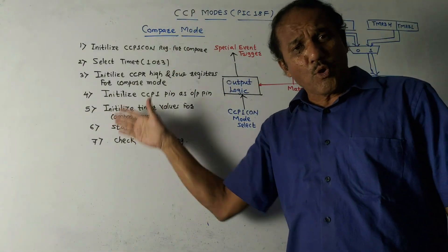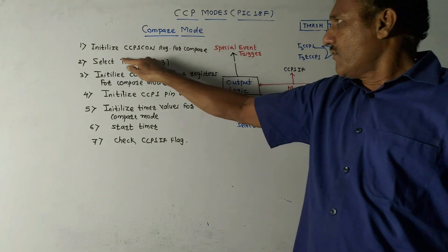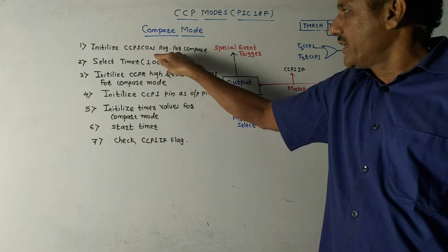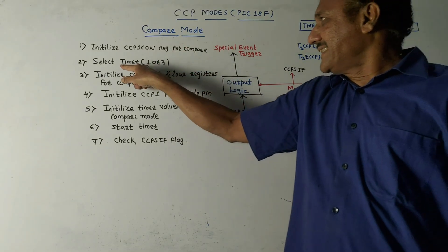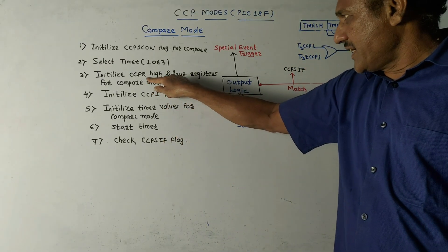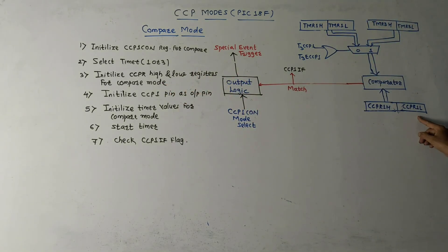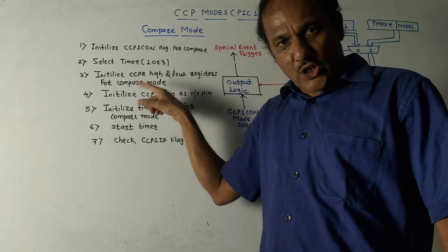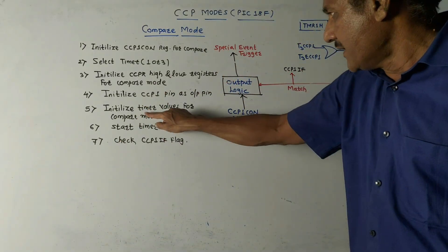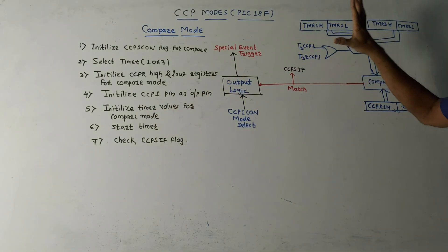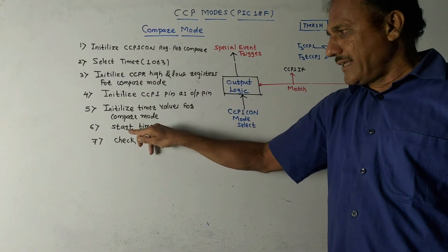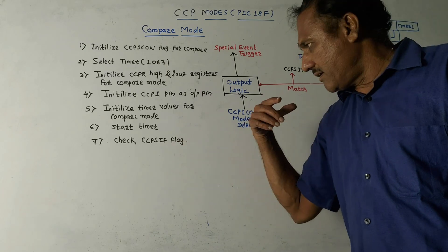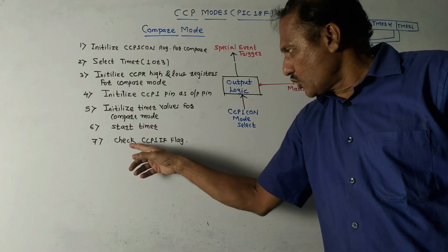The steps for writing programs for compare mode are: first, initialize the CCP1CON register for compare operation; second, select Timer 1 or Timer 3; third, initialize CCPRH and CCPRL registers for compare mode; fourth, initialize the CCP1 pin as an output pin; fifth, initialize timer values for compare mode; then start the timer, and whenever a comparison is found the flag bit will give an indication — so we check the flag bit.